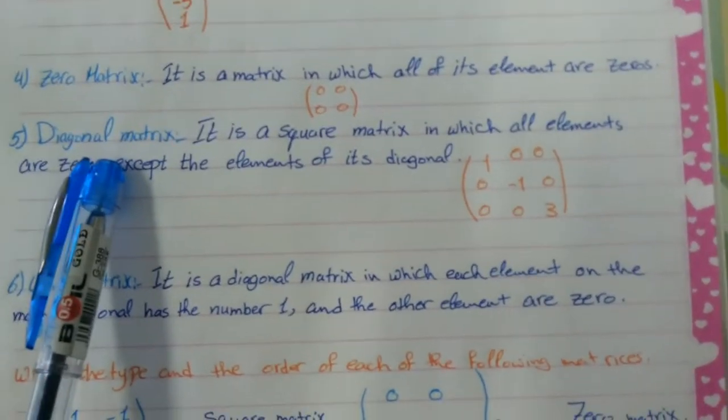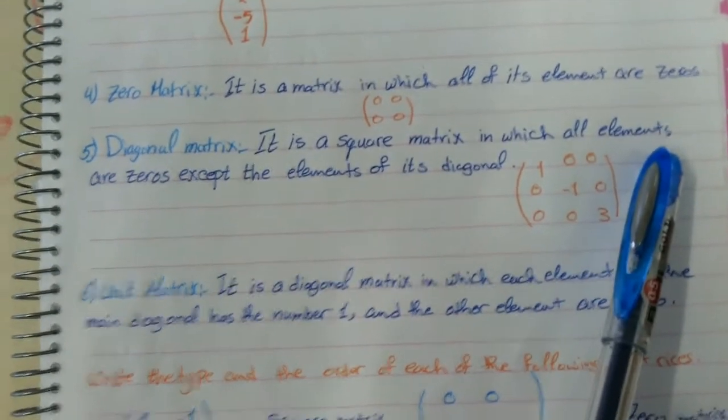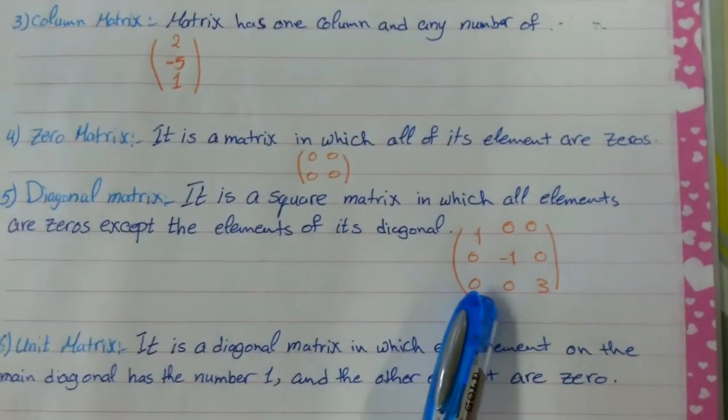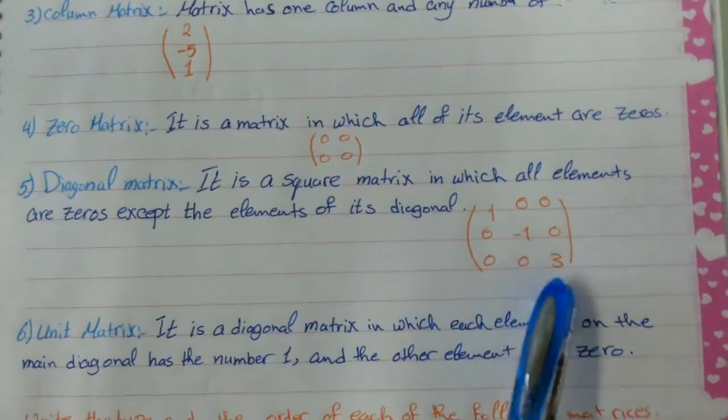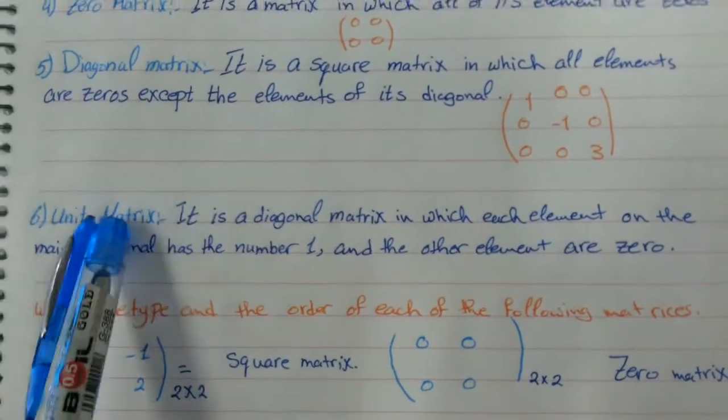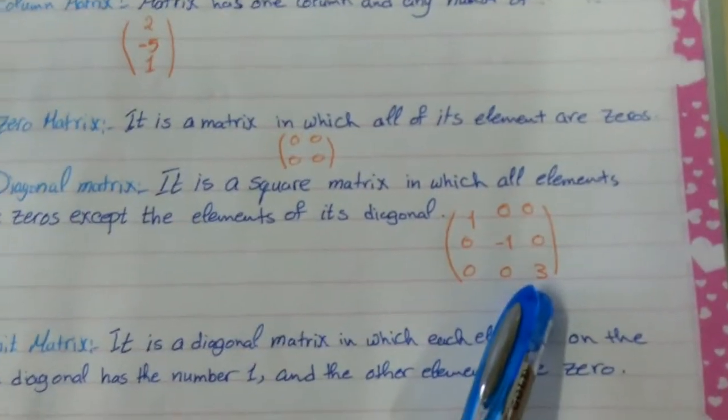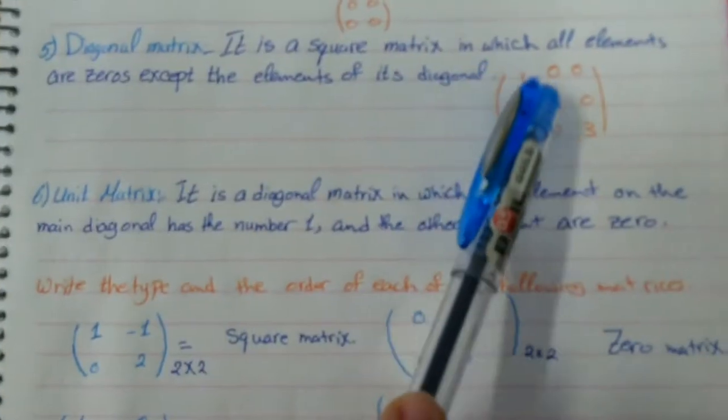Diagonal matrix, it has to be a square matrix and all of the elements are zeros except the diagonal. Unit matrix is the same as the diagonal, but the diagonals here are any numbers. But in the unit matrix, it must be 1.